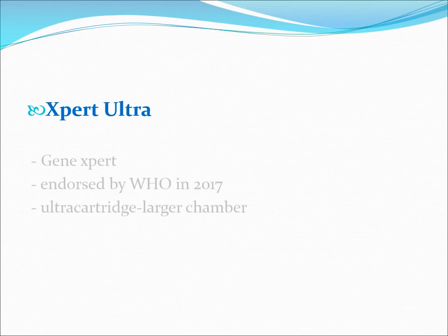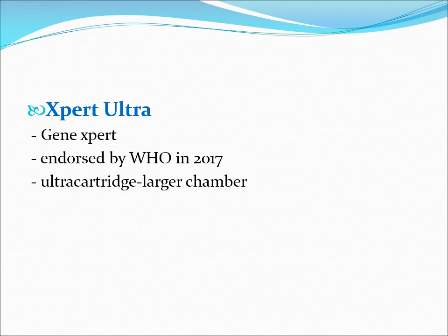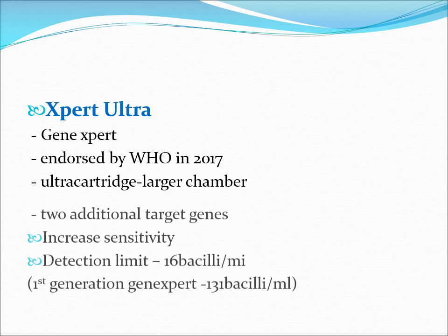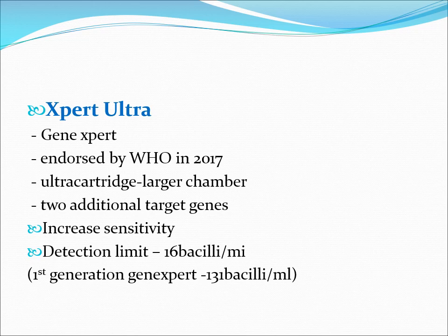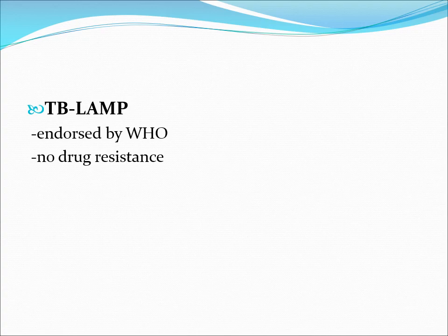Xpert Ultra is a modification of GeneXpert, also endorsed by WHO for TB diagnosis. It has a larger cartridge chamber and two additional target genes, giving increased sensitivity. The original GeneXpert detects as low as 131 bacilli per mL, whereas Xpert Ultra can detect as few as 16 bacilli per mL. TB-LAMP is also WHO-endorsed, but does not provide information on drug resistance.